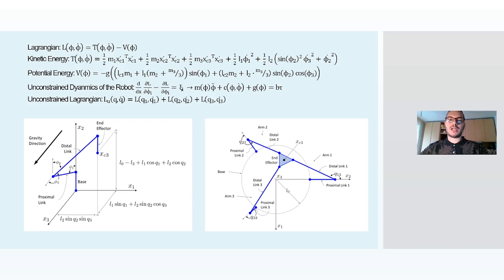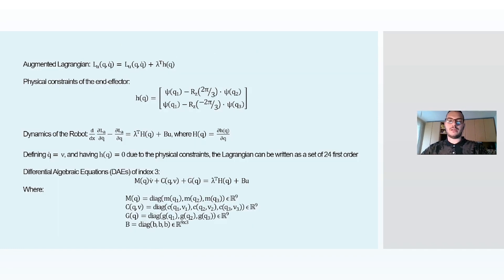In the first part of this analysis, we will consider the Lagrangian as unconstrained, so there will not be any constraints on the end effector. The unconstrained Lagrangian is given by the sum of the Lagrangians for each link. Then we will define the so-called augmented Lagrangian, in which there is a contribution of the unconstrained Lagrangian, plus another term that contains all the physical constraints on the end effector. At the end of this analysis, we will derive the dynamical equations of the Delta robot.